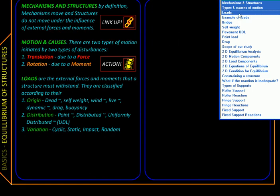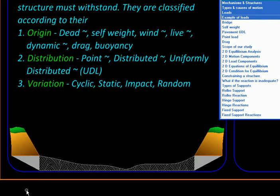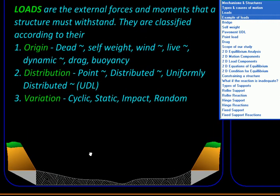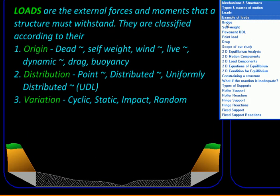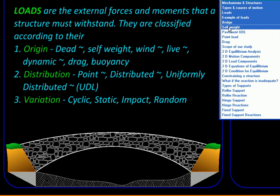So let us see an example of loads, various kinds of loads. So here is a site at which we want to build something, say a bridge of this shape. Now this bridge will be made of some material, maybe masonry, maybe stone. So that itself is going to cause some load on this structure. So that is self weight.